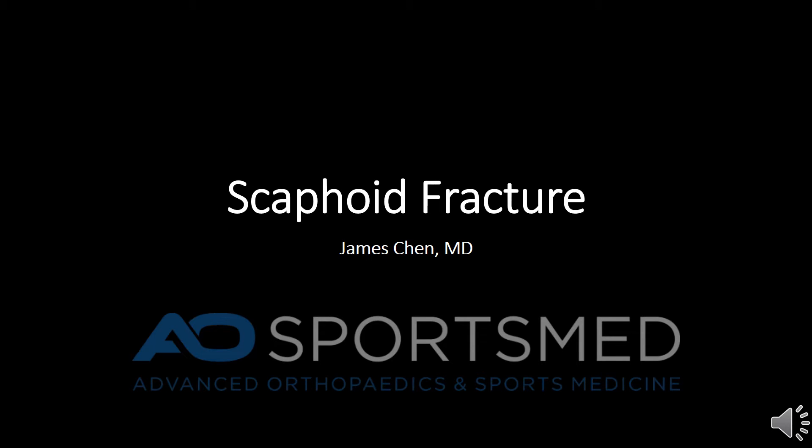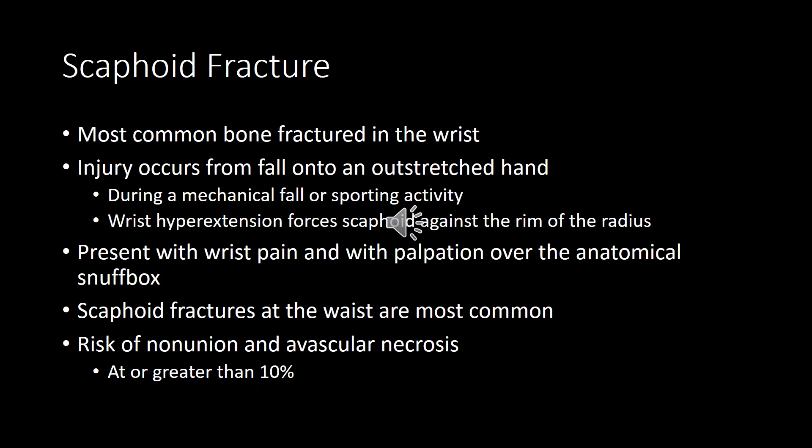This is a brief presentation on scaphoid fractures and treatment. Scaphoid fractures are the most commonly fractured bone in the wrist. Injury occurs from a fall on an outstretched hand during a mechanical fall or sports activity. Wrist hyperextension forces the scaphoid against the rim of the distal radius. Patients usually present with wrist pain and palpation over the anatomical snuff box.